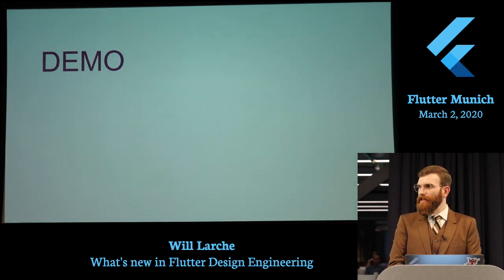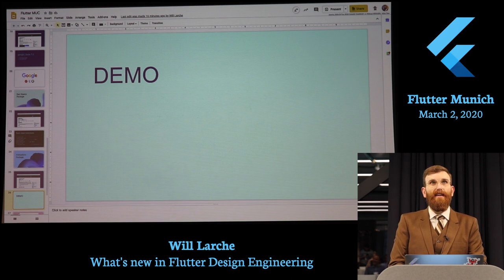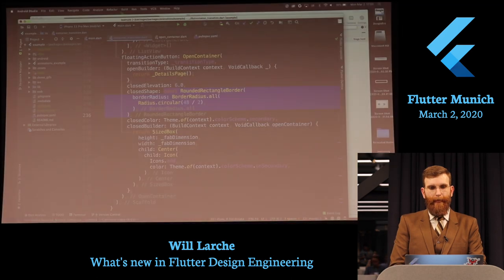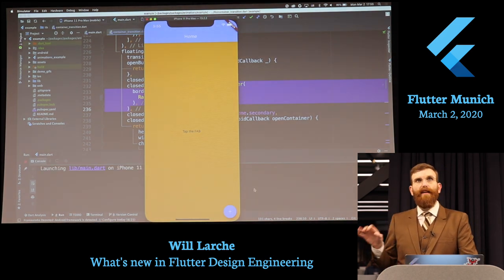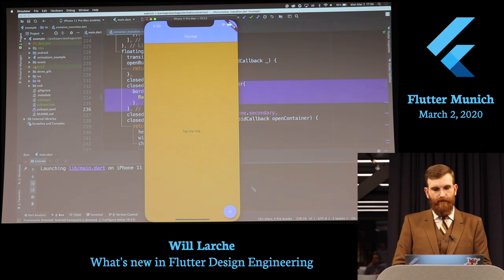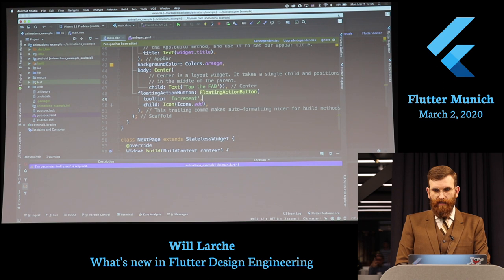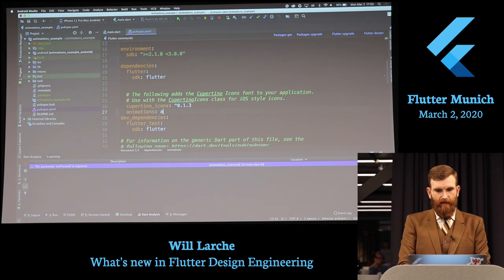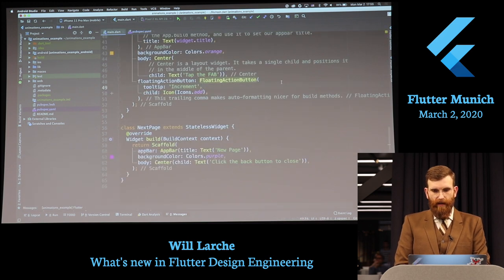I'm going to show you real quick how easy it is to get it into an app. I've got a super simple app — this is almost exactly like the starter app you get, except I've changed a couple things to help the demonstration look a little better. All I'm going to do is go over here to my pubspec, add the animations package, save it, hit packages get, come back over here and import it.